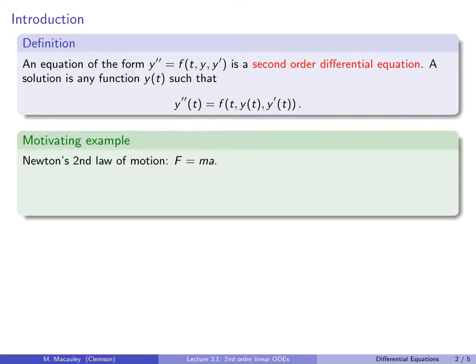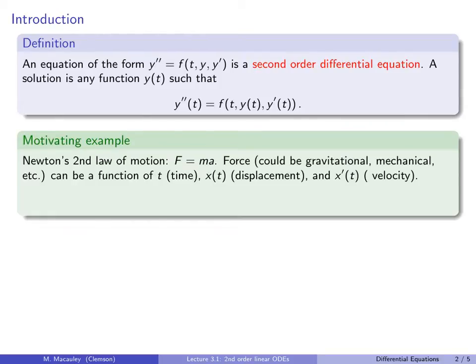As a motivating example, let's revisit Newton's Second Law of Motion. Force is mass times acceleration. Now, force could be gravitational, mechanical, or something else, and it can be a function of time, displacement, and velocity. In other words, force, which is some function of t, x, and x prime, by Newton's Second Law is m x double prime, and if we solve for x double prime by dividing through by m, we can write Newton's Second Law as a second-order differential equation. And in the remainder of this lecture, we will focus on a few examples of this, starting with when the force is just gravity and getting more complicated by considering mass-spring systems.